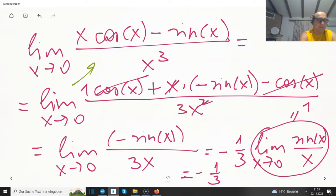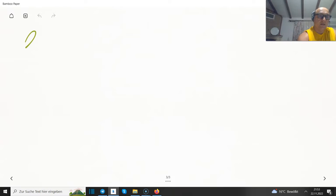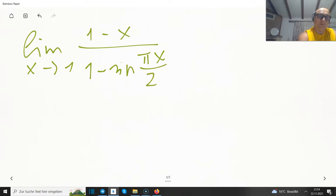Okay, so let's do the next, and I think it's going to be the last for tonight. x towards 1, 1 minus x in the numerator, and 1 minus sine of πx divided by 2 in the denominator. So we have sine of π divided by 2. If x is running towards 1, so sine of π divided by 2 is 1, so 1 minus 1 in the denominator and 1 minus 1 in the numerator. So once again 0 divided by 0.